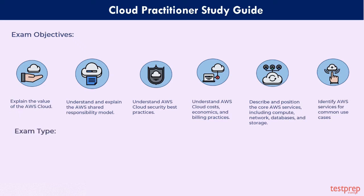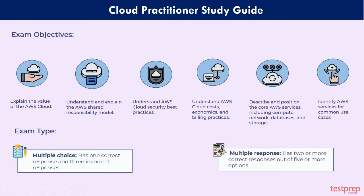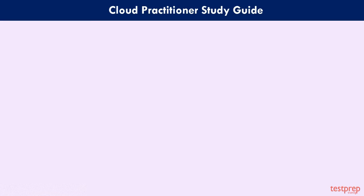Exam Types: There are two types of questions on the examination. First, Multiple Choice — the type of question which has one correct response and three incorrect responses. Second, Multiple Response — the type of question which has two or more correct responses out of five or more options. Unanswered questions are scored as incorrect; there is no penalty for guessing.